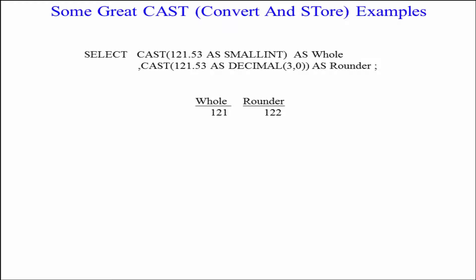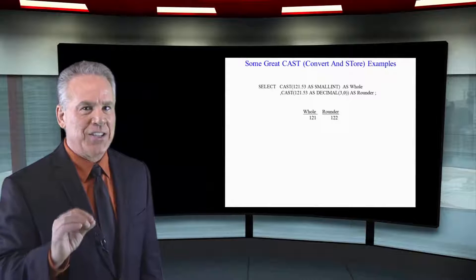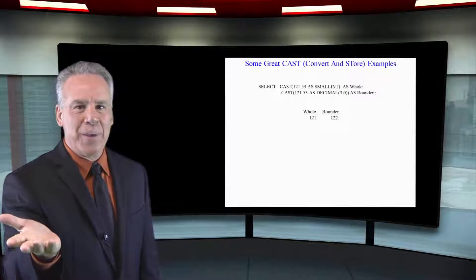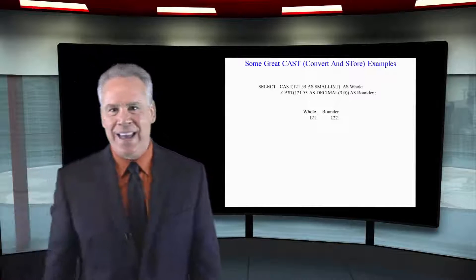Secondly, and this is the one you've got to be careful of, I'm going to take that same number 121.53 and I'm going to cast that as a decimal three comma zero. When the system sees this, it says it's three digits in length, but I'm going to have zero decimal points, and it's either going to round it up, which it has, or round it down based on if it's greater than 50 or lower than 50 in that decimal.